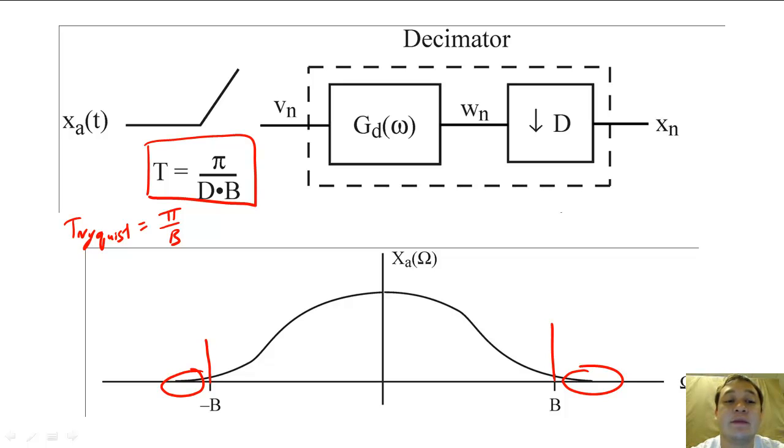To create an oversampling A to D converter, we need to sample the signal at D times the sampling frequency that we would normally use to sample the signal. After we sample this signal, we would low-pass filter the input and then downsample the input.